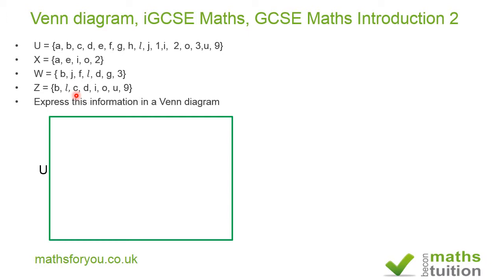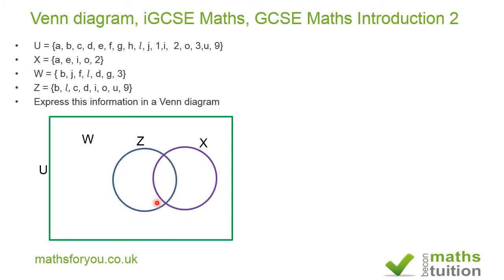Now I draw sets X, W, and Z in my Venn diagram. I fill in the elements common to X and Z in their intersection: O, I, L, D, and B.